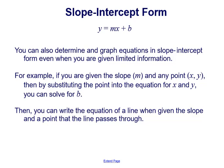You can also determine and graph equations in slope-intercept form even when you are given limited information. For example, if you are given the slope m and any point (x, y), then by substituting the point into the slope-intercept form equation for x and y, we can solve for b. Then you can write the equation of a line when given the slope and a point that the line passes through.